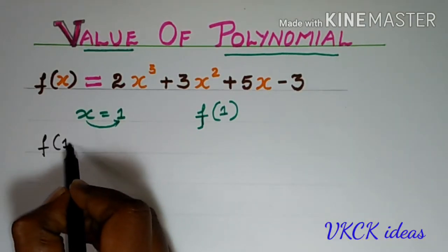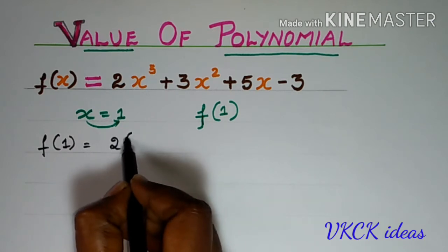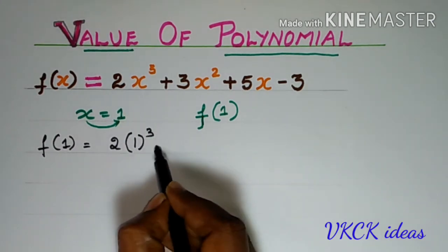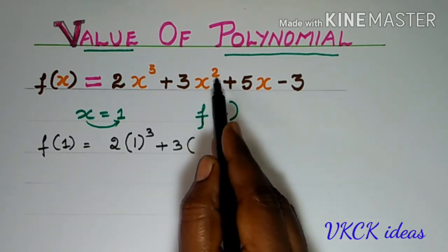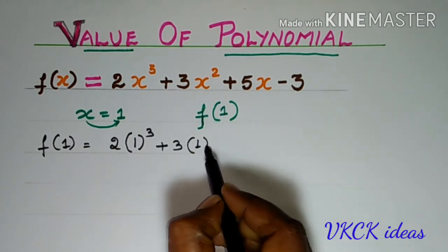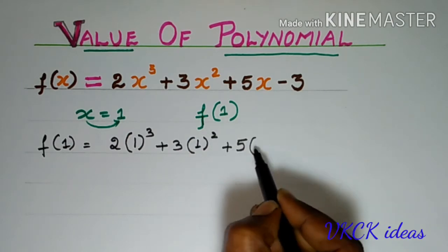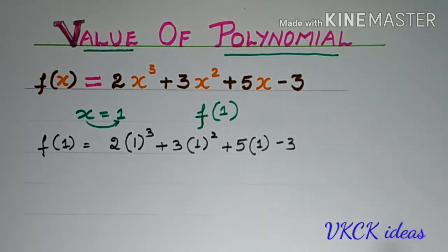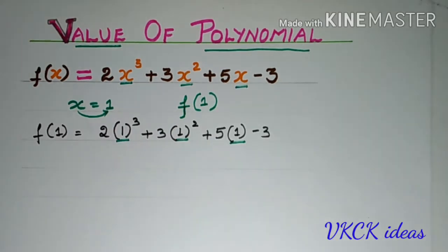f(1) is equal to 2. In place of x, I will be writing 1. So, it is 1³ plus 3. In place of x, I will be writing 1. So, it is 1² + 5 × 1 - 3. Just observe, wherever there was x, I have written 1.